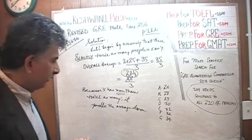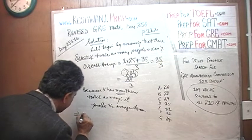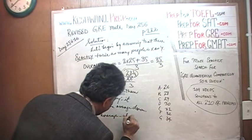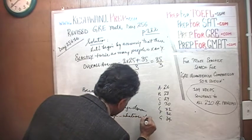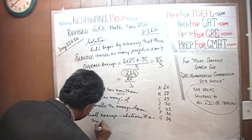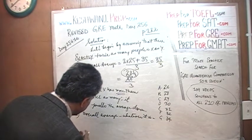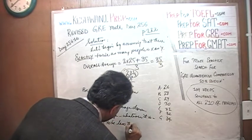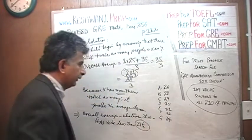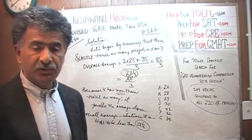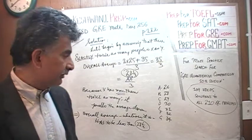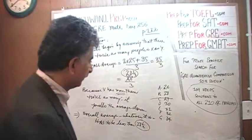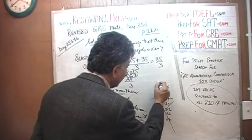It pulls the average down. That implies that the overall average — whatever it is — must be less than 28 and 1/3. The question asked which amounts could be the overall average. The answer is: it cannot be $29,000 because that is more than 28 and 1/3. It cannot be $30,000, $31,000, or anything above 28 and 1/3. The answer is A or B — $26,000 and $28,000.